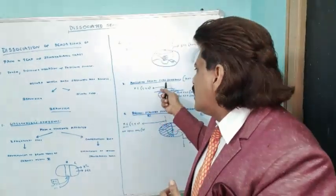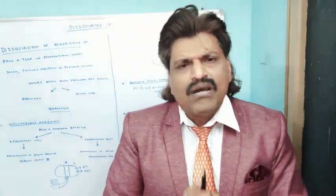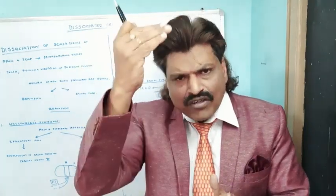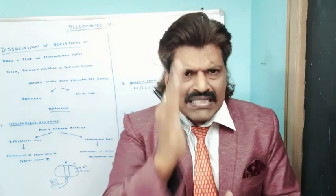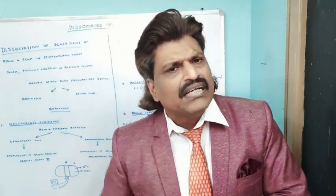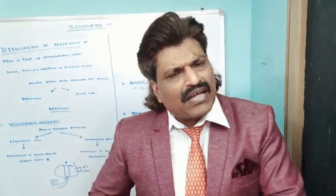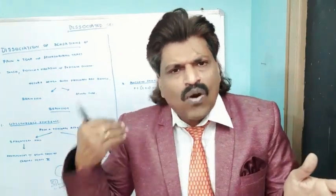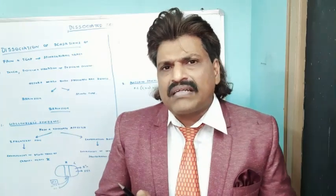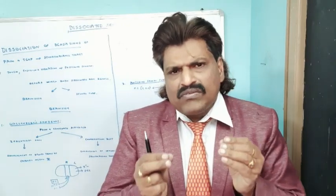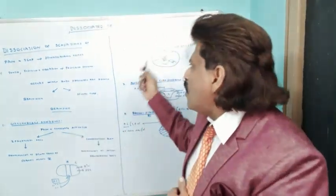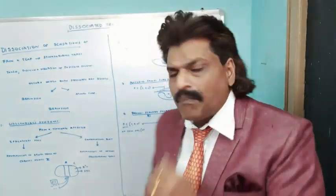Finally, Brown-Séquard syndrome is a hemi-section of the spinal cord where one half of the cord is cut. The posterior column sensations on the same side are affected, while the spinothalamic tract crosses immediately to the opposite side. So with a right-sided hemi-section, position, joint, and vibration sense are lost on the right side, but pain and temperature are lost on the opposite left side. This again demonstrates dissociated sensory loss, with the two tracts affected on opposite sides.